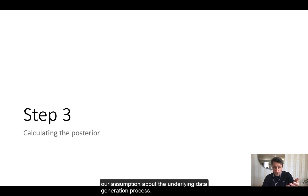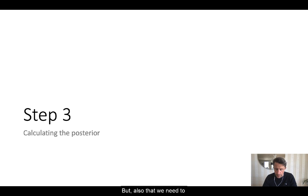So we've decided that we need to pick a likelihood, our assumption about the underlying data generation process, but also that we need to select priors for the parameters that we want to estimate. Now it's time to actually sample using our empirical data.